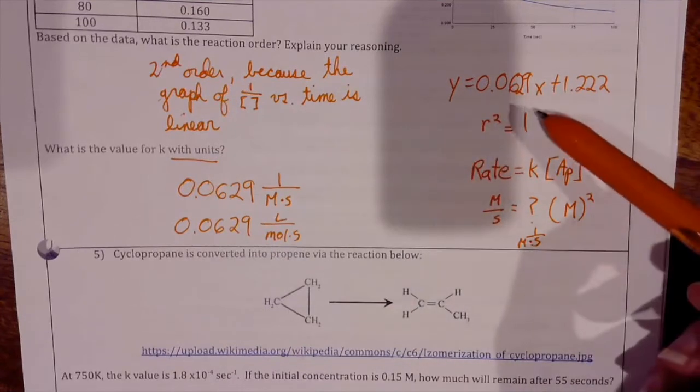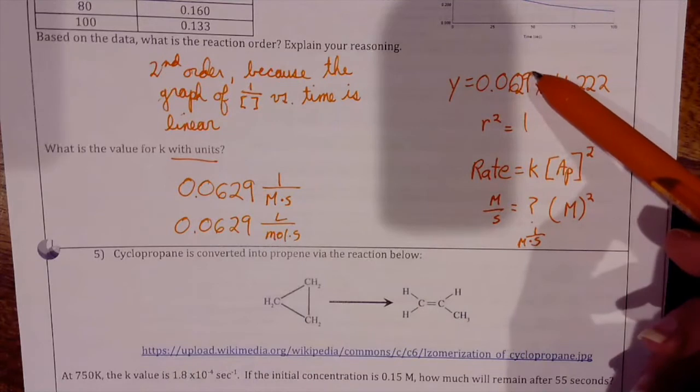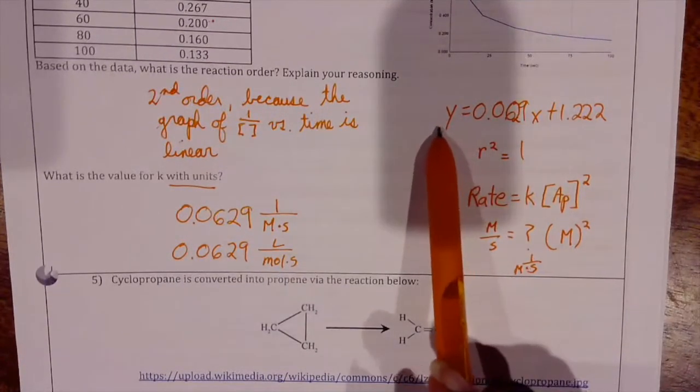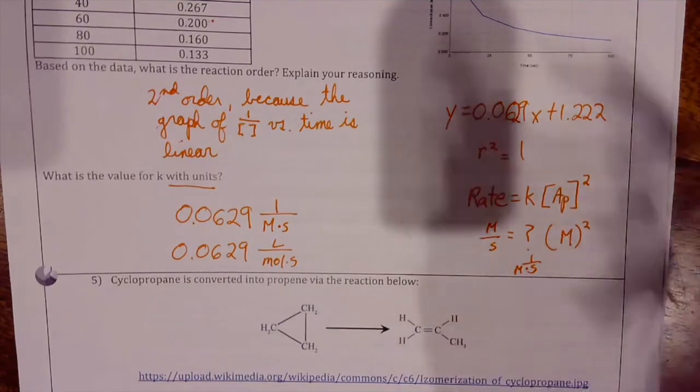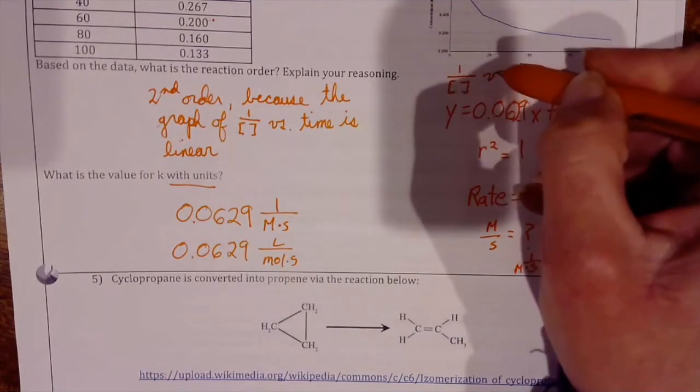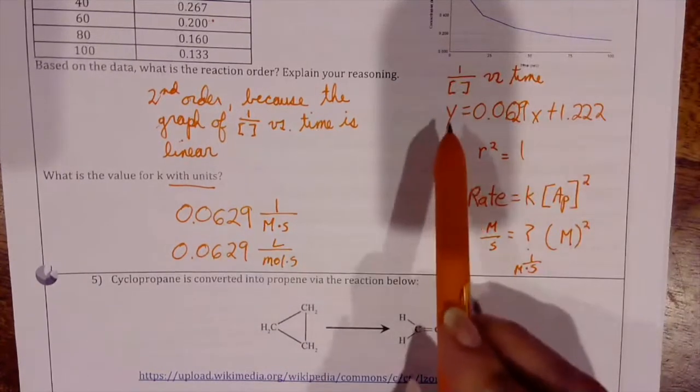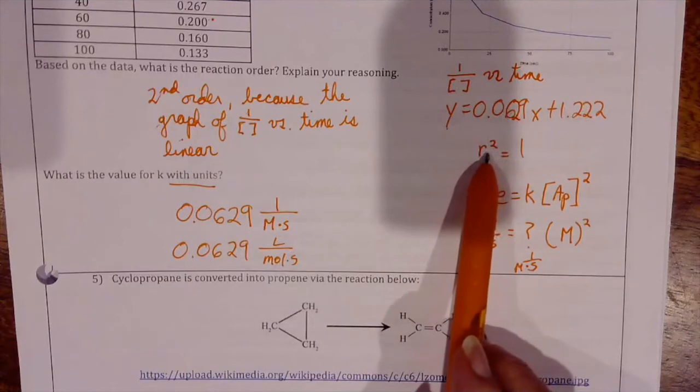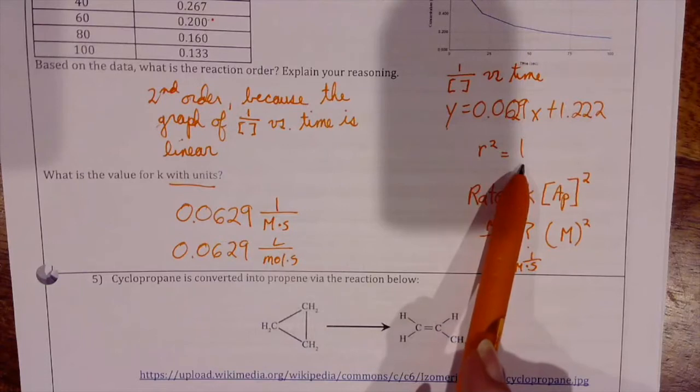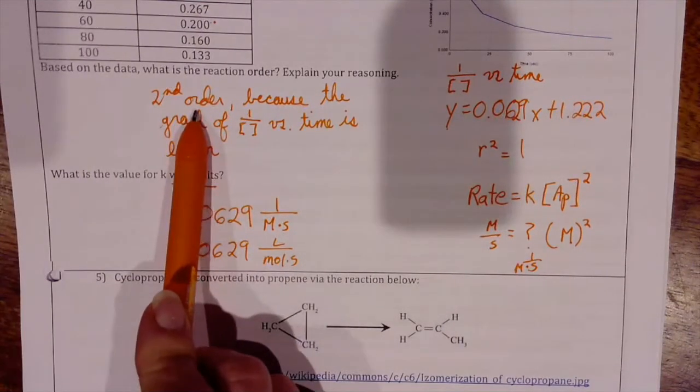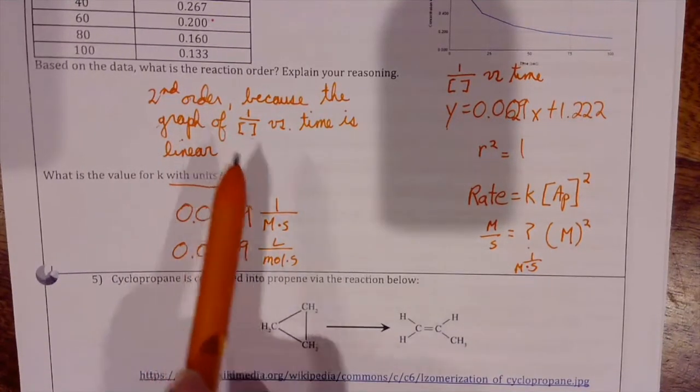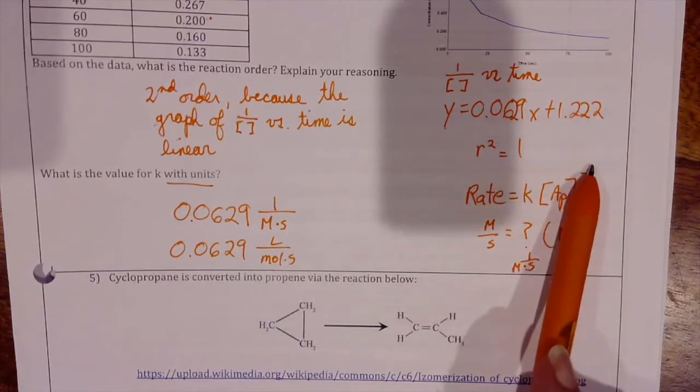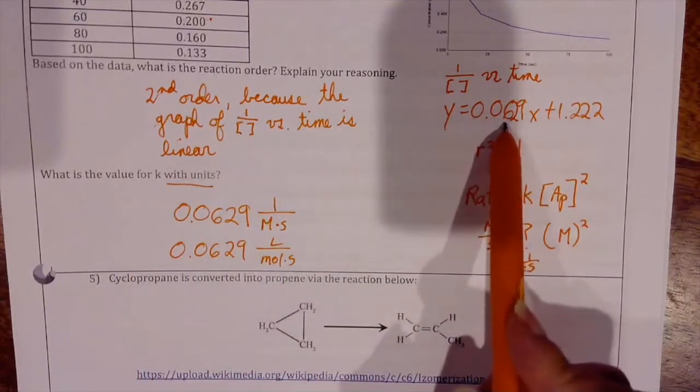Having run this on my spreadsheet and graphed it, when I graph 1 over concentration versus time, I get that my graph is y equals 0.0629 times x plus 1.222, and the r-squared value for that is one. So this tells me that this is a very good fit for the line, so that confirms our theory that this is second order because the graph of 1 over concentration versus time is linear. That means I can write a rate law that tells me that the rate equals k times the concentration of A squared.